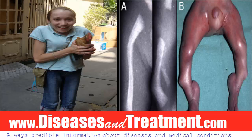Affected individuals have distinctive facial features which include a small chin, prominent eyes, and a flat face, and they also have a large head compared to their body size. A particular group of physical features called Pierre Robin sequence includes an opening in the roof of the mouth, a cleft palate, a tongue placed further back than normal, and a small lower jaw.